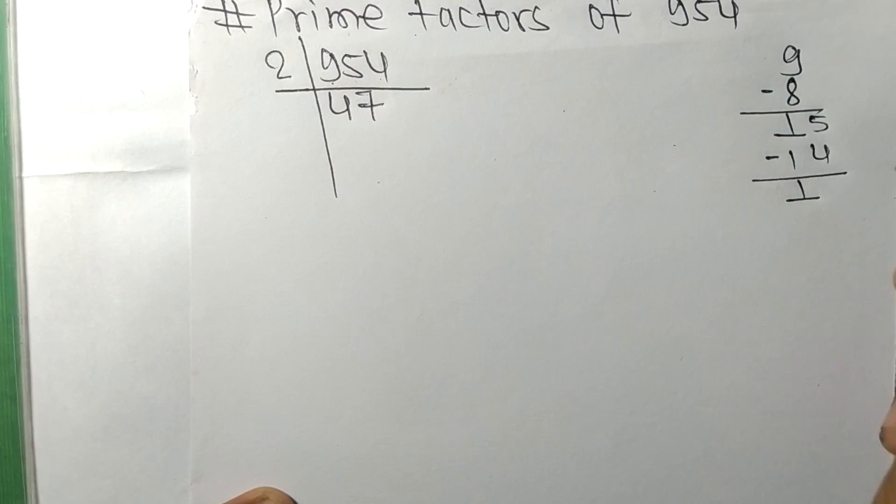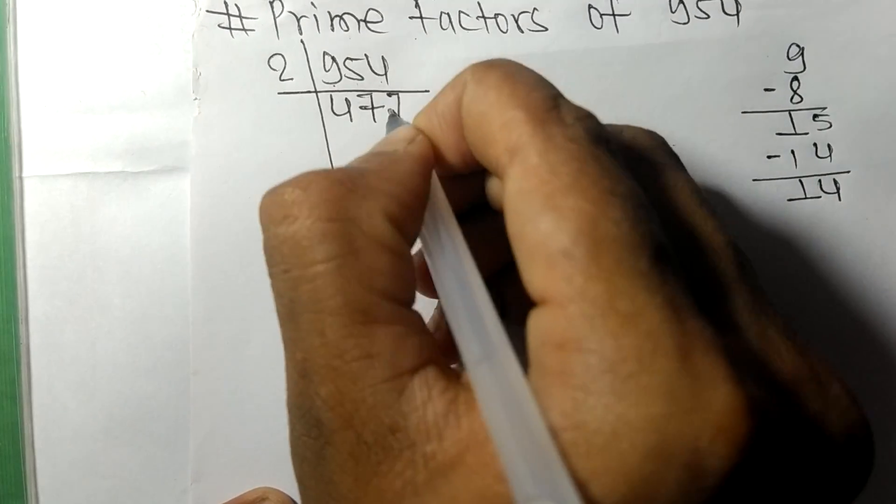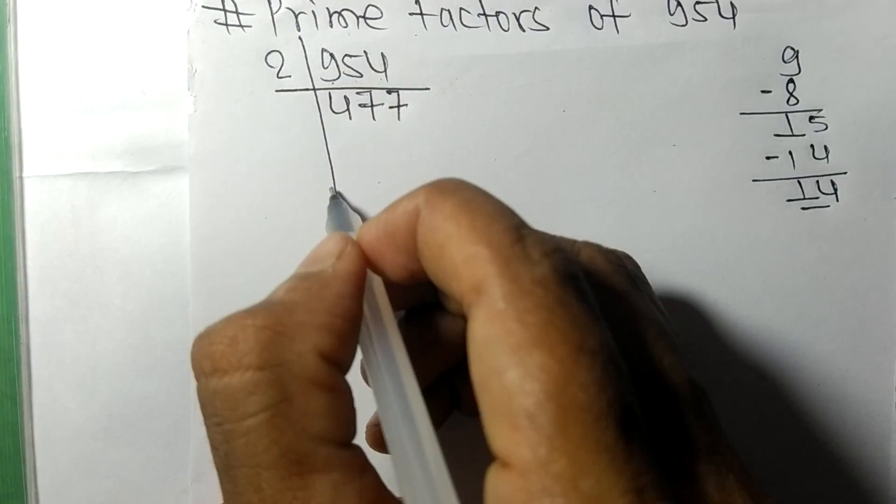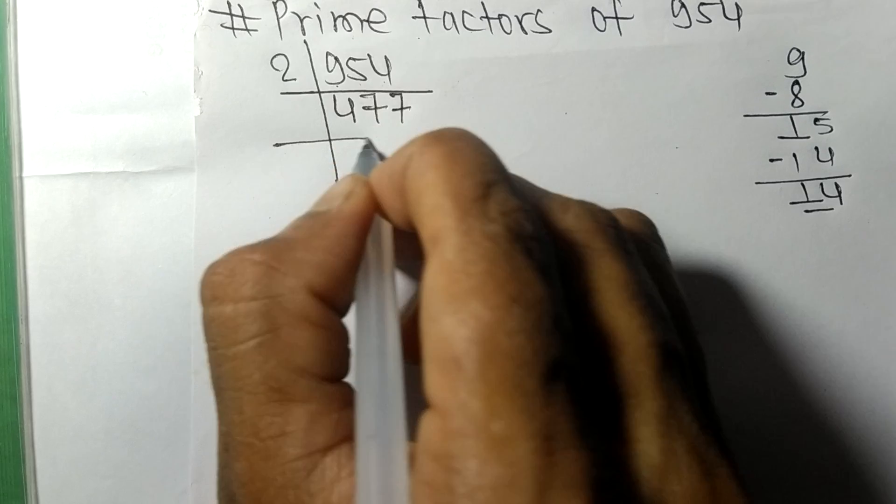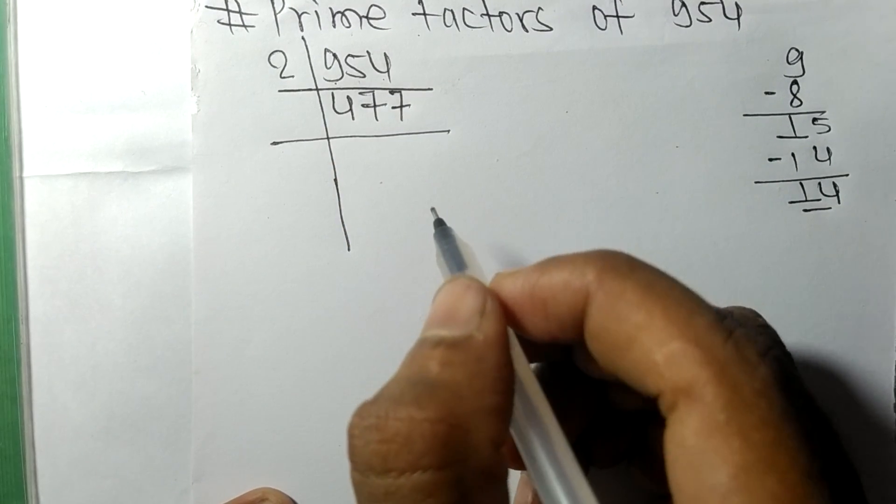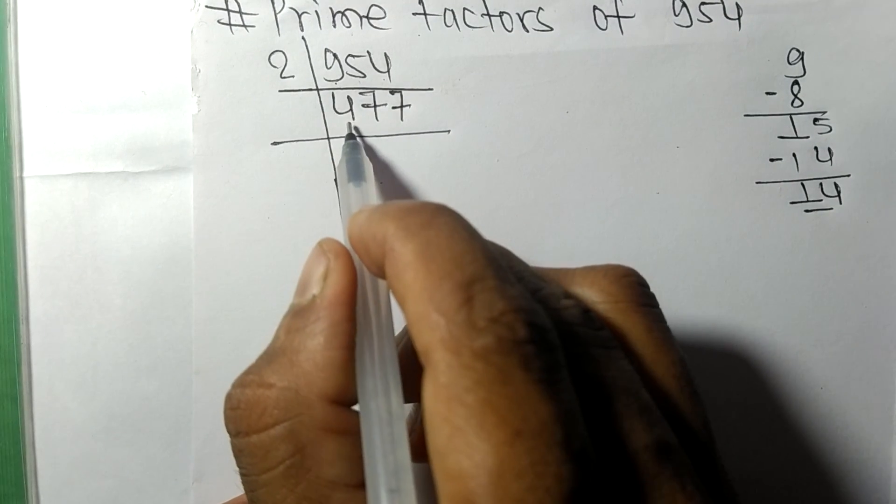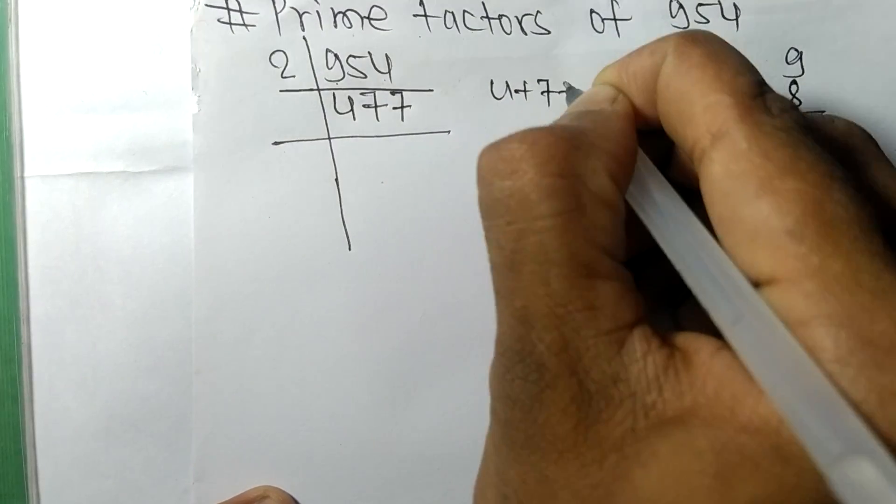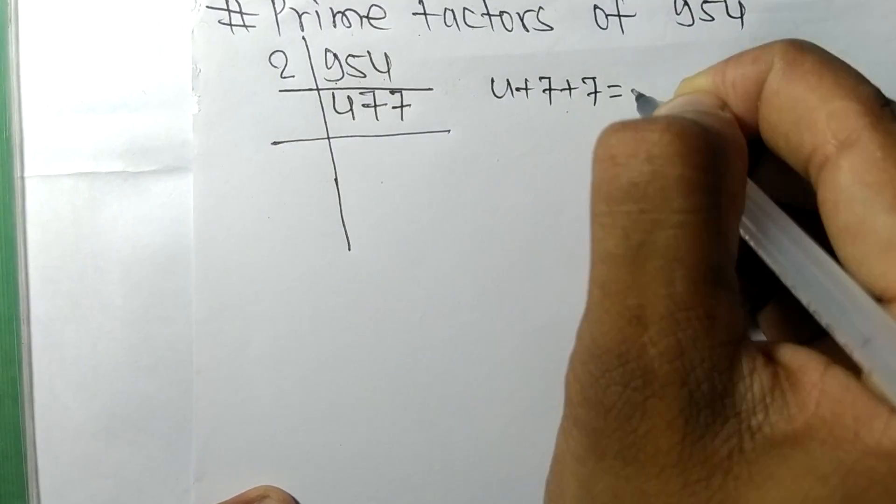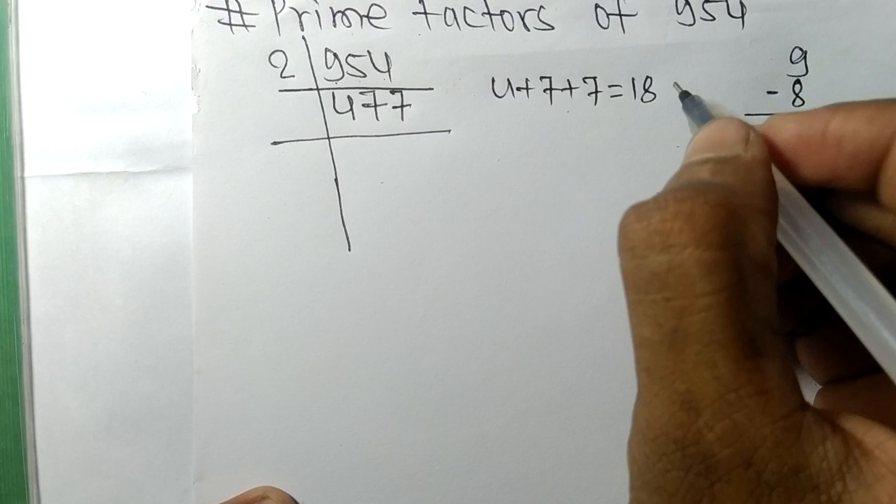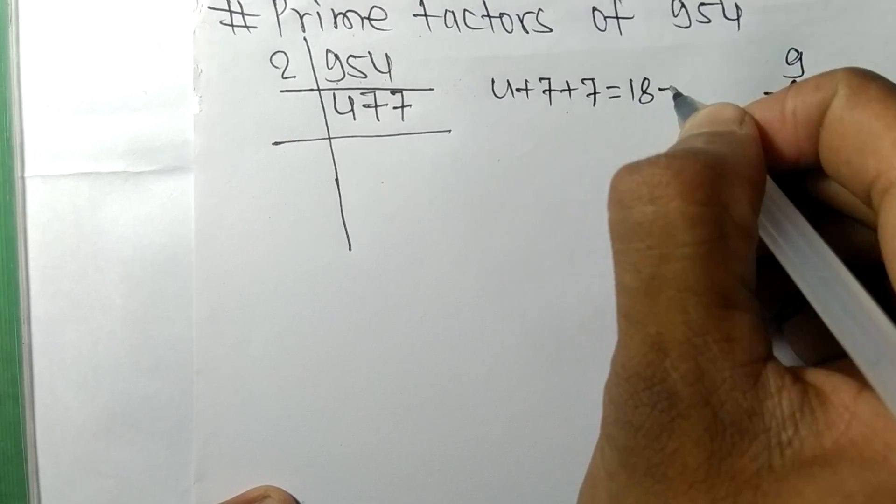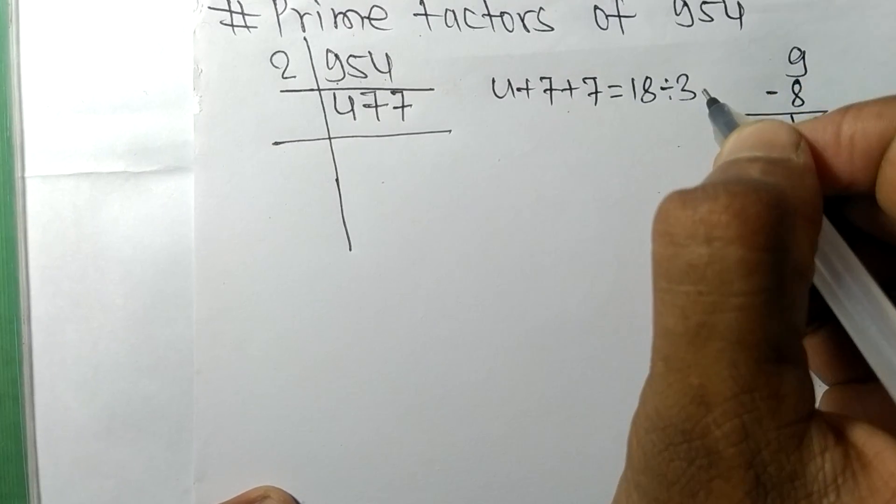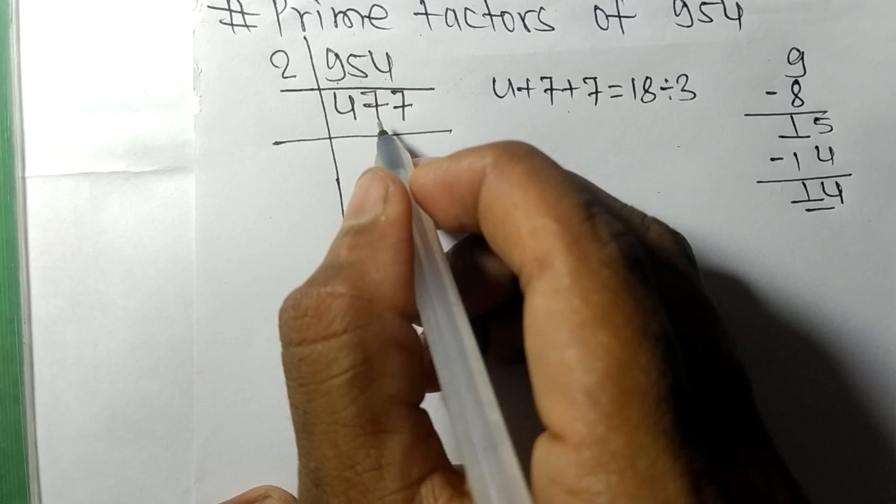This 4, 14, 2 times 7 means 14. So now we got 477. When we add all these numbers, that is 4 plus 7 plus 7, then we get 18. And 18 is exactly divisible by 3, so 477 is also divisible by 3.